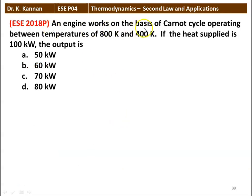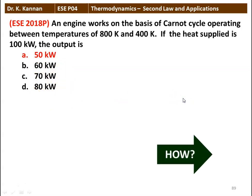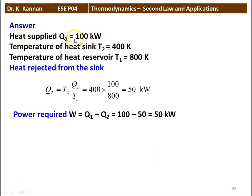Next question: an engine working on the Carnot cycle operates between temperatures 800 Kelvin and 400 Kelvin. If the heat supplied is 100 kilowatt, the work output is: 50 kW, 60 kW, 70 kW, or 80 kW. The answer is 50 kilowatt. Heat supplied Q1 = 100 kW, T2 = 400 K, T1 = 800 K. Heat rejected: Q2 = T2 × Q1 / T1 = 400 × 100 / 800 = 50 kW. Work output: W = Q1 − Q2 = 100 − 50 = 50 kilowatt.